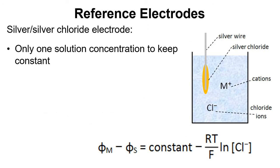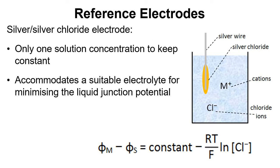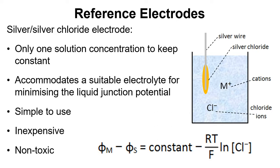In terms of putting this together, there's only one solution concentration to keep constant in order to keep the potential difference between the wire and the solution fixed. If we fix the concentration of chloride ions, we fix the potential difference, which is really useful when making a reference electrode or an ion-selective electrode. It also accommodates a suitable electrolyte for minimizing the liquid junction potential — if we use potassium ions alongside chloride ions, the liquid junction potential is minimized, as explained in the previous video on liquid junction potentials. It's also simple, inexpensive, and non-toxic.